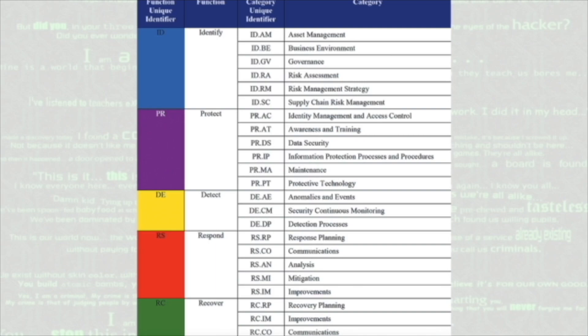Although some organizations find the framework core categories and subcategories to be a bit daunting, NIST intends them to be resources from which certain elements can be selected and examined depending on the organization's unique configuration. NIST does not intend to make this structure serve as a checklist of required activities. In the next video, we are going to talk about the framework implementation tiers.